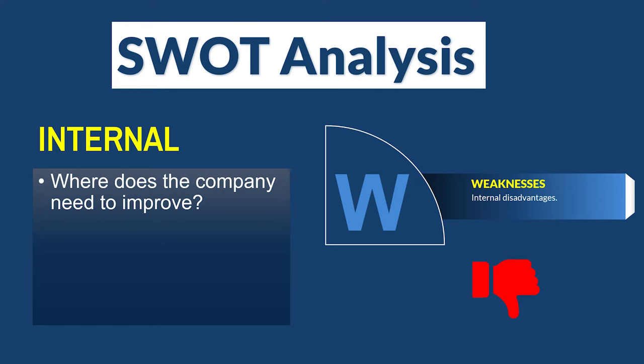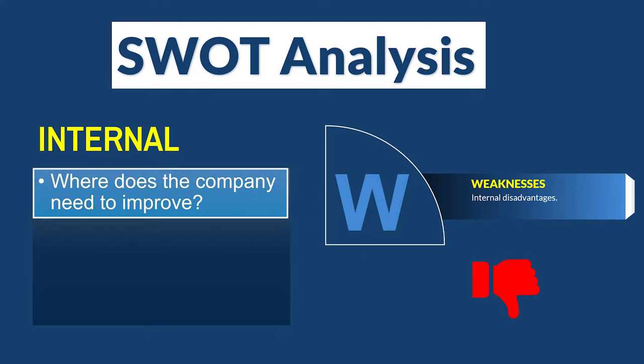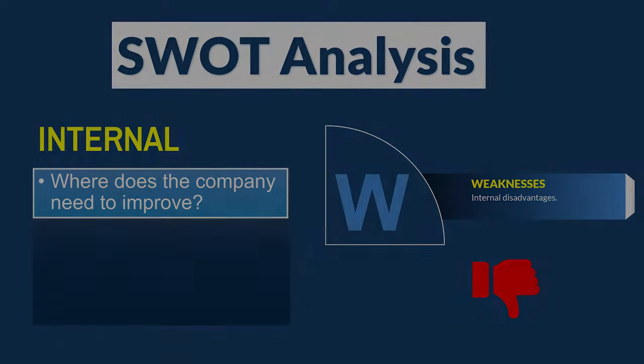Those same things can be weaknesses in most cases too. Your weakness is: what can you improve upon? What can you do differently? Is it that you have outdated technology? That could be a weakness for your organization because you're not as efficient as you could possibly be.